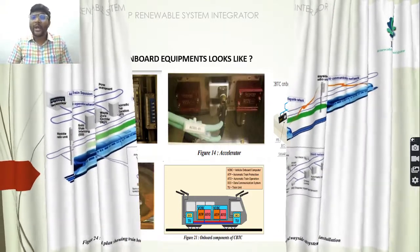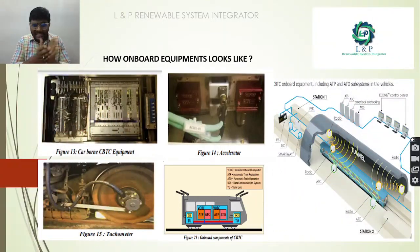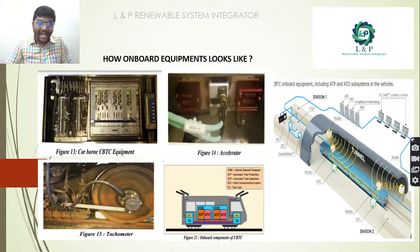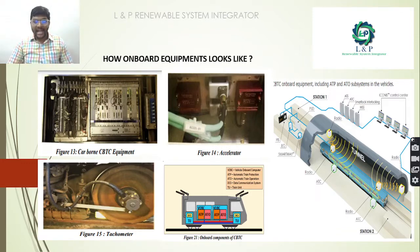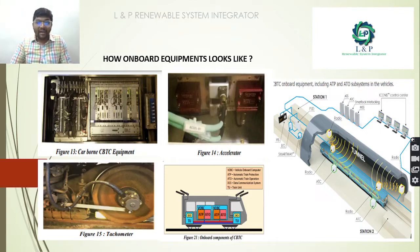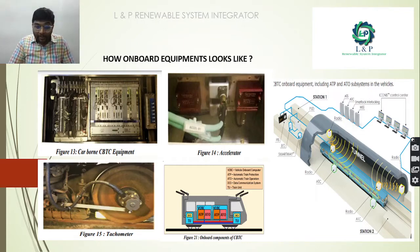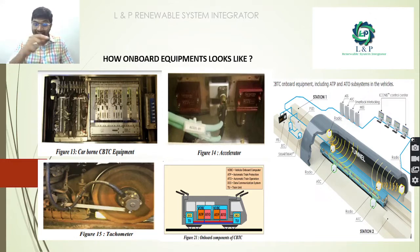Looking at how the on-board equipment looks: inside the train we have a CBTC equipment unit, an accelerator, a tachometer on the wheels to know the speed, a vehicle on-board computer, automatic train protection, automatic train operation, a data communication system, and train units.